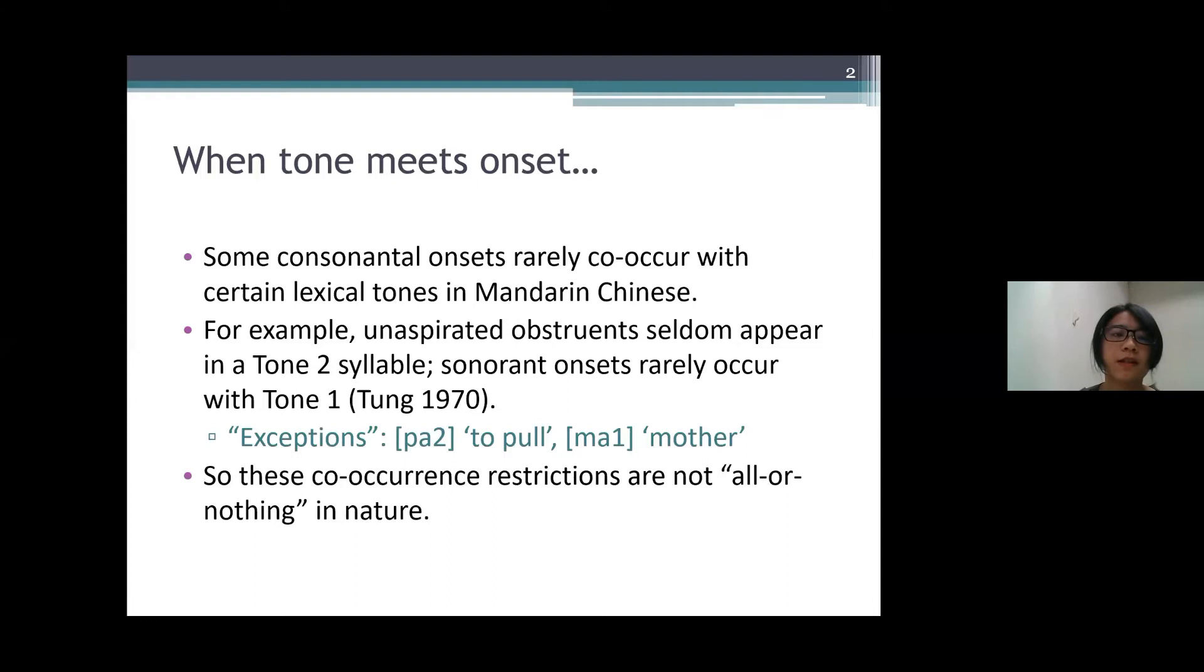Mandarin Chinese is a tonal language, and it has been noted that some consonantal onsets rarely co-occur with certain lexical tones in Mandarin Chinese. For example, as a result of historical tone split, unaspirated obstruents seldom appear in a tone 2 syllable, and sonorant onsets rarely co-occur with tone 1.